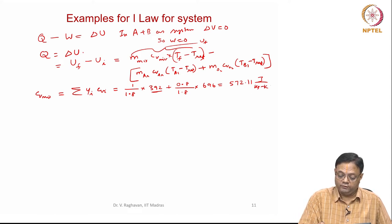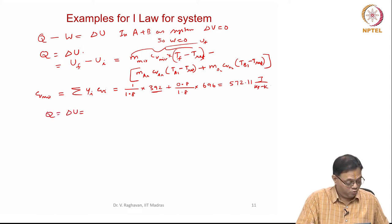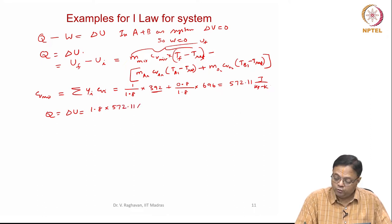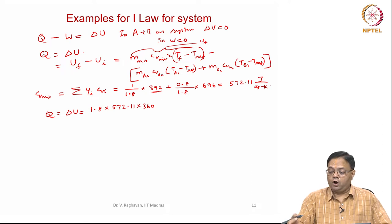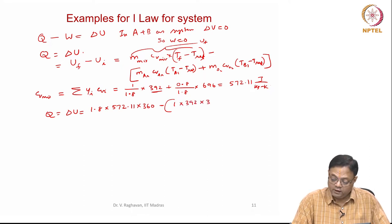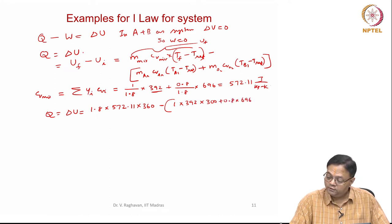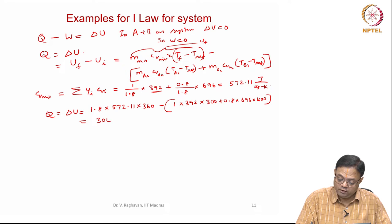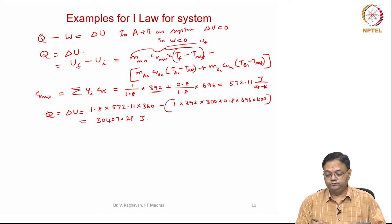So Q equals delta U equals 1.8 × 572.11 × 360 minus [1 × 392 × 300 + 0.8 × 696 × 400], which equals 30,407.28 joules. That is the heat interaction for this problem.